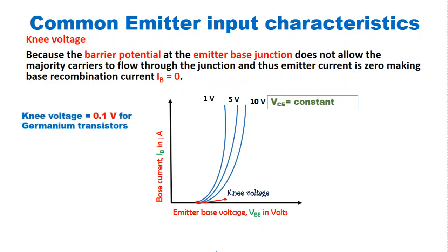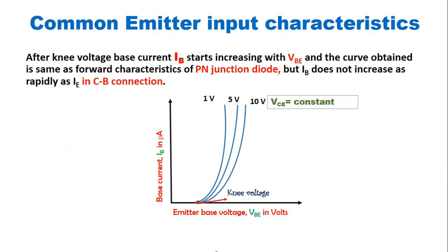This knee voltage is equal to 0.1 volt for germanium transistors and equal to 0.5 volt for silicon transistors. But after this knee voltage, base current starts increasing with base to emitter voltage VBE, and the curve obtained is the same as the forward characteristics of a PN junction diode, as shown in the figure.